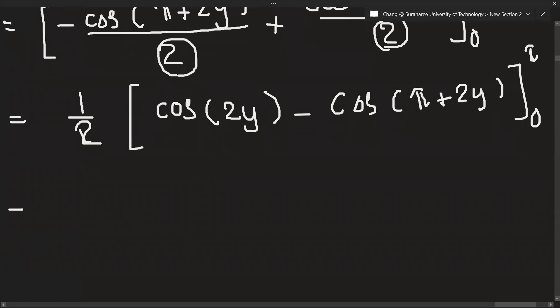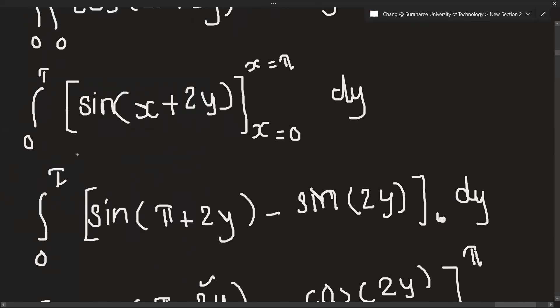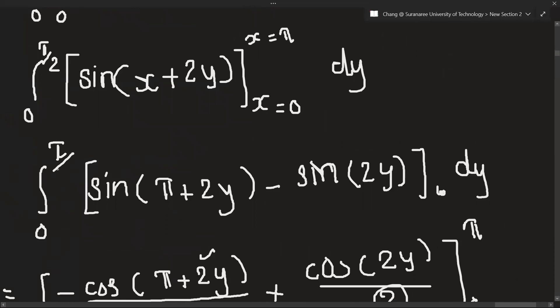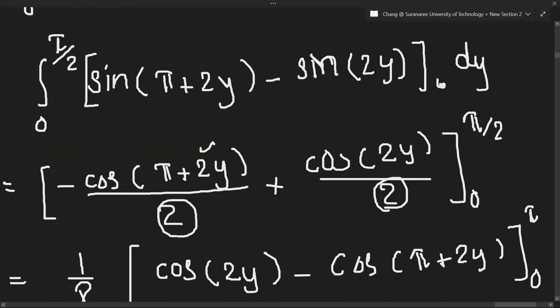All right, so let's insert the values of y. 1 over 2, cos. Wait, wait. The value of y is pi over 2, right? Okay, here pi over 2. Sorry, we have to write pi over 2. I'm sorry that I forgot. Pi over 2 here, and also pi over 2 here.